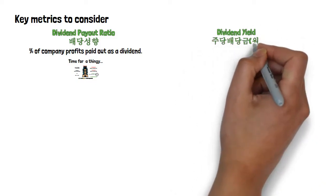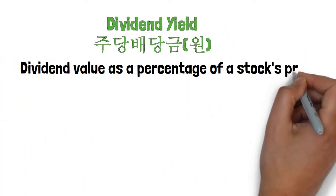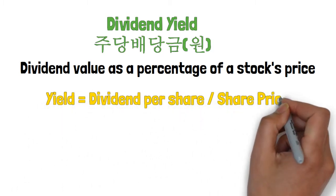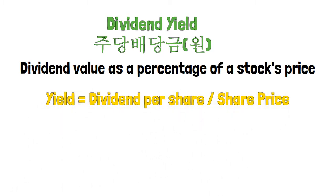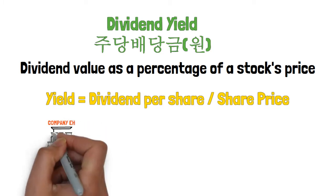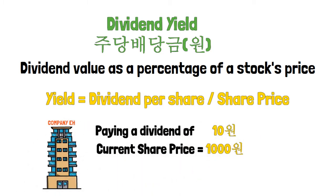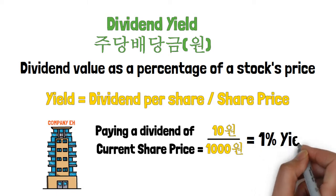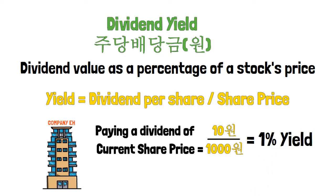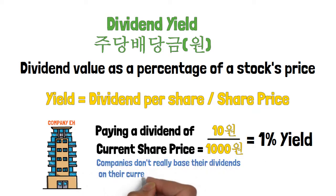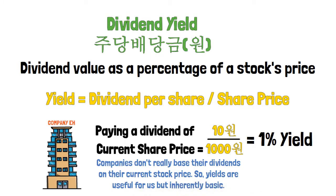Next we have dividend yield. To calculate the dividend yield, we simply divide the dividend payment per share by the price of the stock. It tells us what percentage of a stock's price is paid back to the share owner through dividends. So, imagine Company A pays out a dividend of 10 won and the company is selling at 1,000 won per share. This would mean the company's stock is yielding 1%, because 10 out of 1,000 is 1%. This is more helpful for the shareholder than for the actual company, because generally companies don't base their dividends on their stock price — volatility would change that on a day-to-day basis.